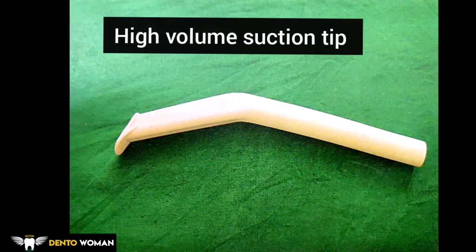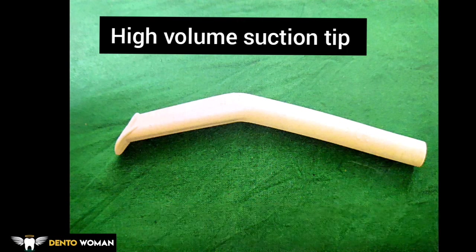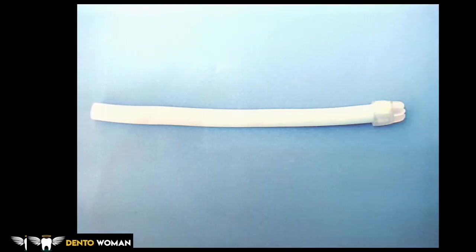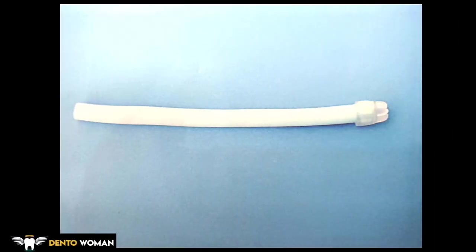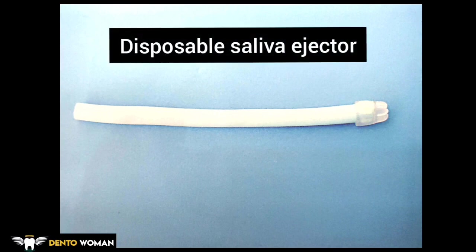High-volume suction tip — narrow bore tubes with a narrow tip, available in a variety of sizes, as autoclavable stainless steel or plastic suction tips. Saliva ejector — also called low-volume suction tip.